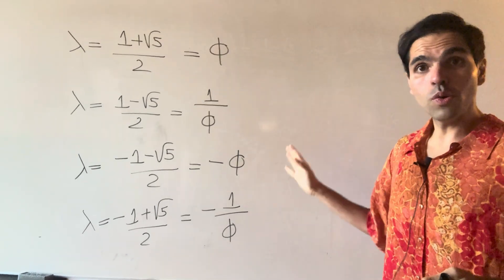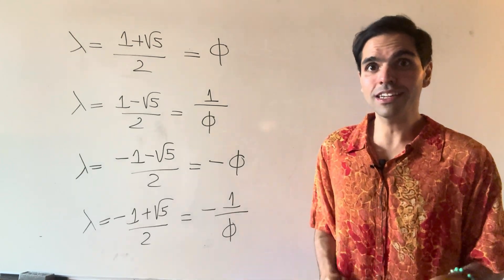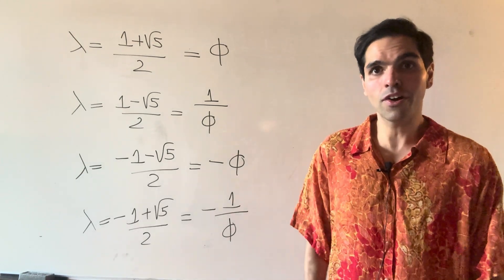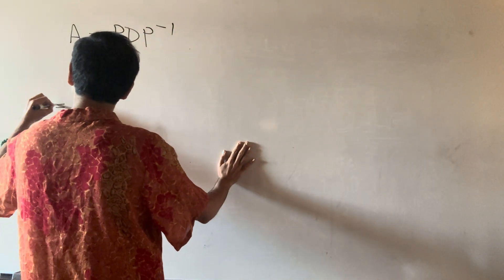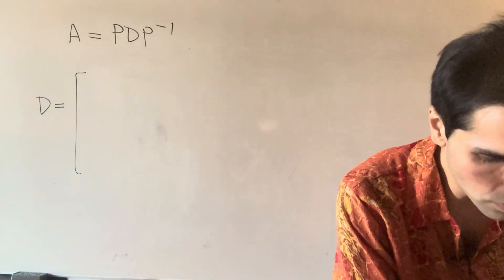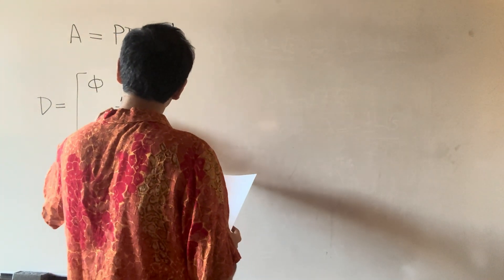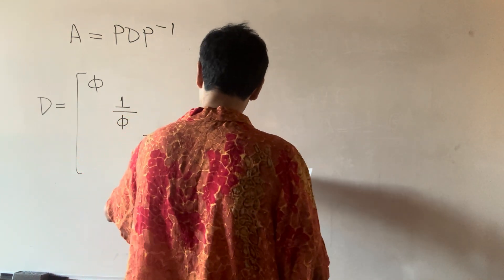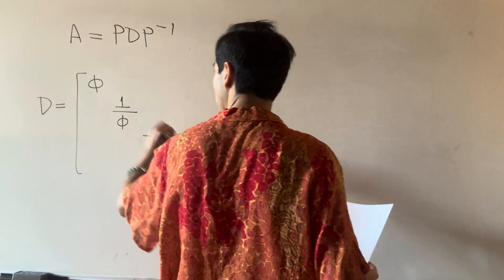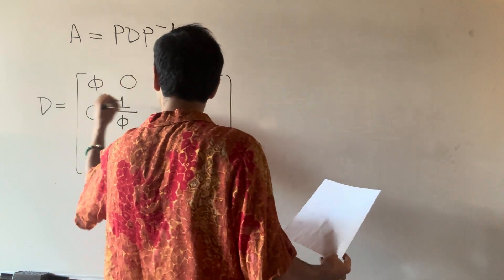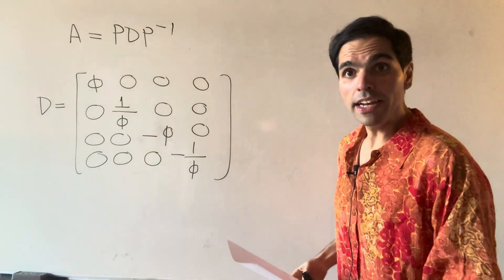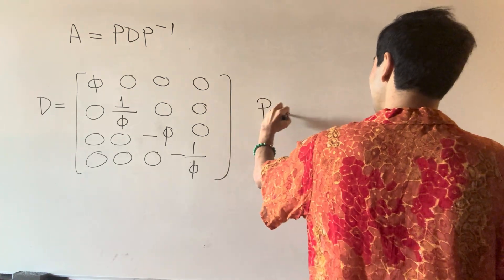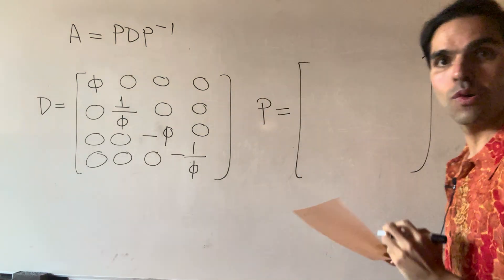And even cooler than that — I'm not going to do it explicitly, but let me tell you what the eigenvectors are. If you want to write it in matrix form, we have A equals P D P inverse, where D is the diagonal matrix of eigenvalues: phi, one over phi, minus phi, and minus one over phi, with everything else zero. And what is the matrix of eigenvectors? It's really cool because you can write everything in terms of golden ratios.